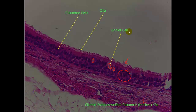These goblet cells produce mucus. In the case of the trachea, this mucus is used to capture dust and debris from the airway, and then the cilia will propel it to the top of the trachea, where you can swallow it and get rid of that dirt into the stomach.